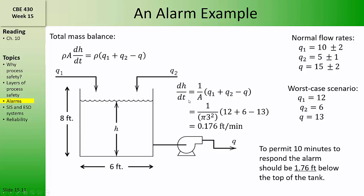Dividing the accumulation by the cross-sectional area of the tank, we find that at the worst-case scenario, the tank level rises by 0.176 feet per minute. Therefore, to permit 10 minutes for the operator to respond to the alarm, the alarm should be placed 1.76 feet below the top of the tank.